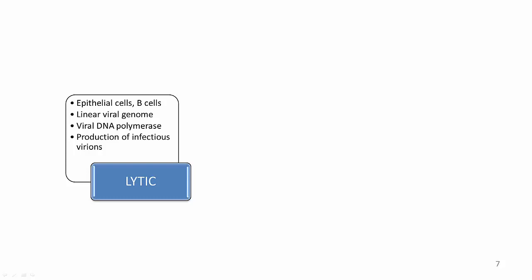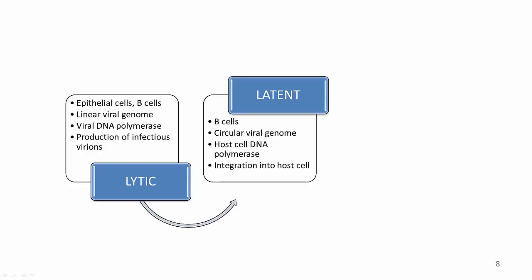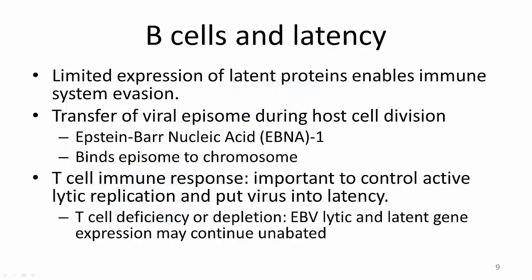So how does EBV maintain this latent stage? When EBV infects a B lymphocyte and enters the latent stage, its linear genome circularizes to form an episome, or an extra-chromosomal element, which is then copied by host cell DNA polymerase and integrated into the nucleus of the host cell. The result is a transformation of the infected B cells, which acquire the capacity to proliferate indefinitely. In latency, only a portion of EBV's genes are expressed. In vitro, these latently infected B cells express only 10 of the approximately 80 genes encoded by the virus. This limited expression of latent proteins enables immune system evasion. The state of latent infection is maintained by the ability of the viral nucleic acid in the episome to transfer itself as host cells divide.